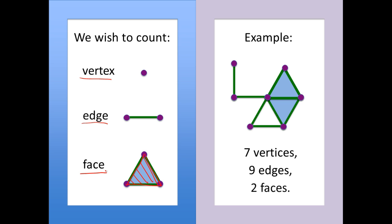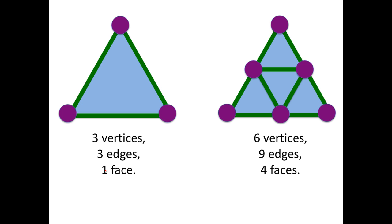In the example on the right we have seven vertices, nine edges, and two faces. In one of the simpler examples we have a triangle with three vertices, three edges, and one face. We can subdivide this triangle so we now have six vertices, nine edges, and four faces.